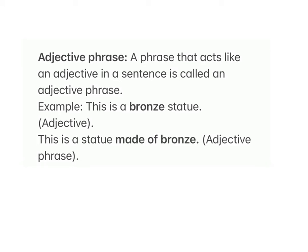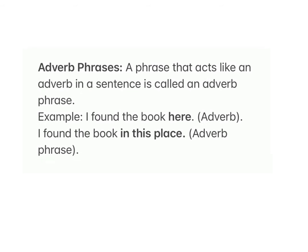An adjective phrase is a phrase that acts like an adjective in a sentence. Example: 'This is a bronze statue' (adjective) versus 'This is a statue made of bronze' (adjective phrase). An adverb phrase is a phrase that acts like an adverb in a sentence. Example: 'I found the book here' (adverb) versus 'I found the book in this place' (adverb phrase).